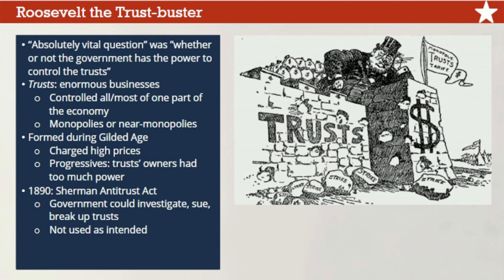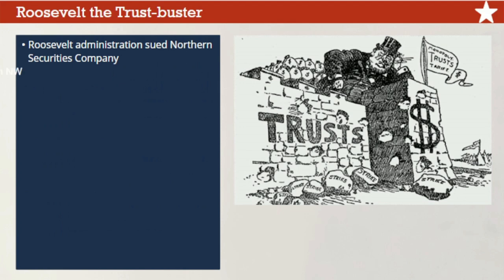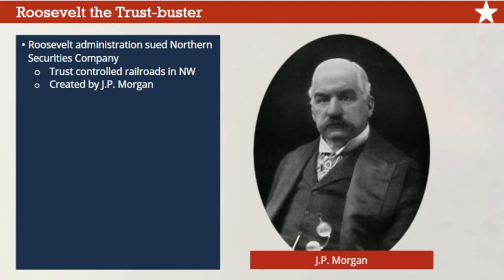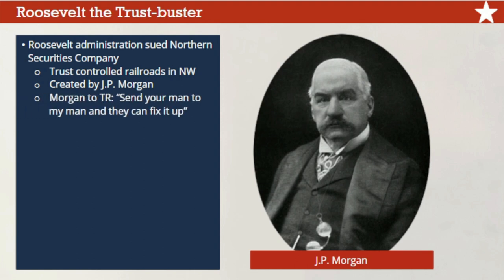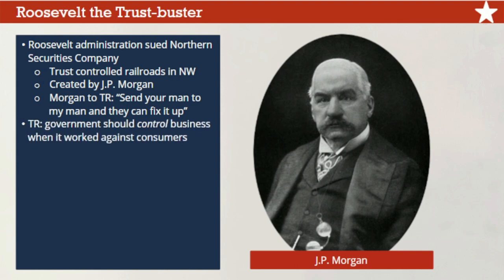This changed under Theodore Roosevelt. Just months into his first term, his administration sued the Northern Securities Company, a trust controlling most of the railroads in the American Northwest. One of its creators was J.P. Morgan, the wealthy financier behind General Electric, U.S. Steel, and AT&T. Like other captains of industry, Morgan was used to operating above the law. 'Send your man to my man and they can fix it up,' he told Roosevelt, as if the president were another businessman. Roosevelt was unimpressed. He believed government should control business when it worked against American consumers. The government won its case, and the trust was split into several smaller railroads.